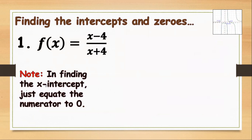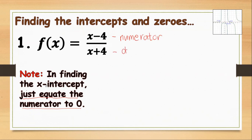How do we find the intercepts and zeros? Number one: f(x) equals x minus 4 all over x plus 4. To find the x-intercept, all you have to do is equate the numerator to 0. Here, x minus 4 is the numerator, and x plus 4 below is the denominator.